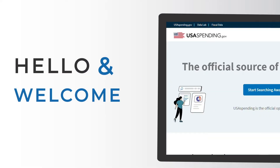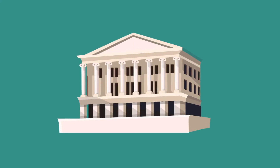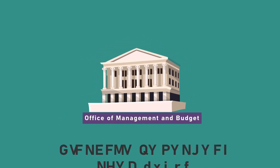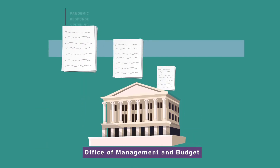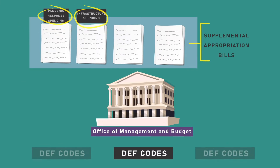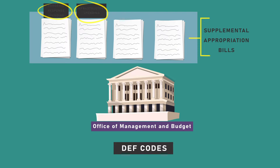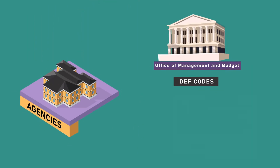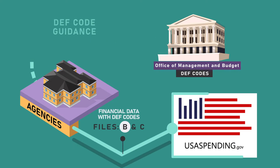Hello and welcome to this USA Spending tutorial video. This video will show you how to use funding codes on USA Spending to find pandemic or infrastructure spending. By way of background, the Office of Management and Budget uses Disaster Emergency Fund Codes, or DEF codes, to track spending from supplemental appropriation bills, such as for pandemic response spending or infrastructure spending.